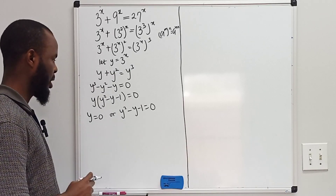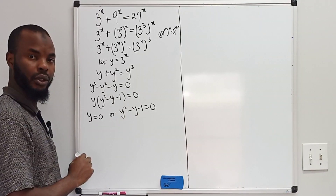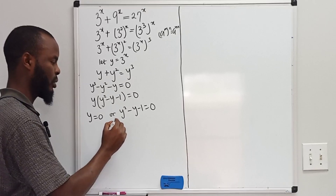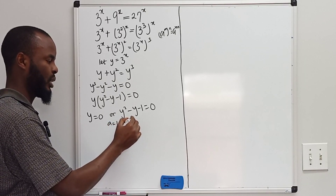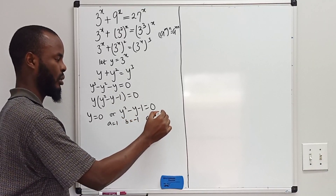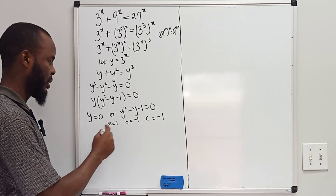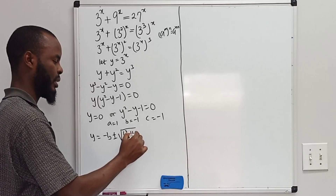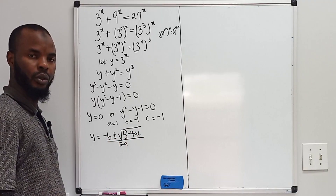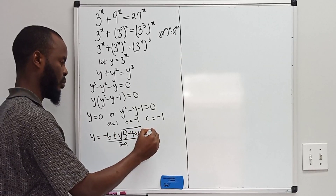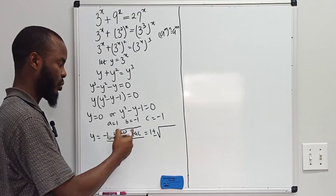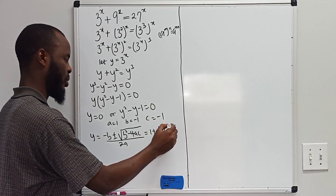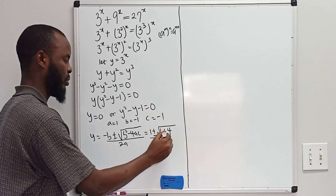Now we have this quadratic equation. Solving this quadratic equation, we can use the quadratic formula, whereby a is the coefficient of y squared which is 1, b is the coefficient of y which is negative 1, and c is also negative 1. So using the formula y equals negative b plus or minus the square root of b squared minus 4ac, all over 2a, and plugging in the coefficients, we're going to have 1 plus or minus the square root of b squared, which is 1, plus 4ac.